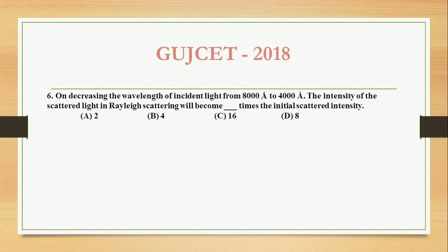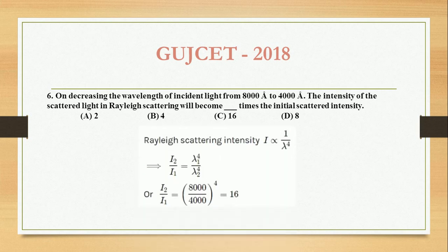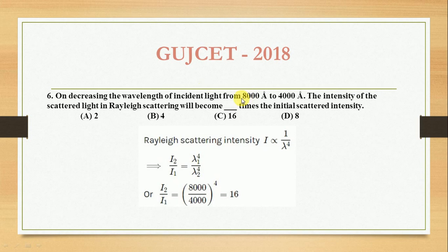Or we can say intensity is inversely proportional to lambda raised to 4. So the formula for Rayleigh scattering intensity I is directly proportional to 1 over lambda raised to 4. Now let lambda 1 = 8000 Angstroms and lambda 2 = 4000 Angstroms. The relation between i1, i2, lambda 1 and lambda 2 is: i2 over i1 is equal to lambda 1 raised to 4 divided by lambda 2 raised to 4.